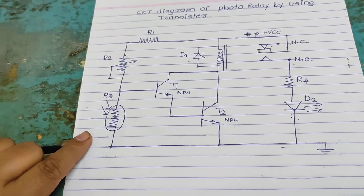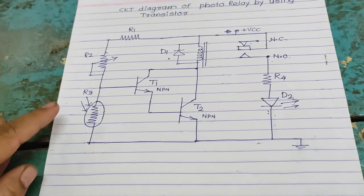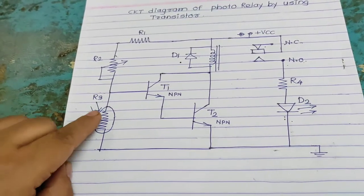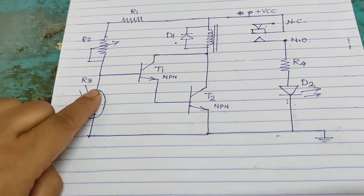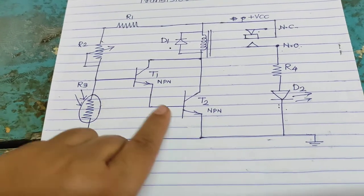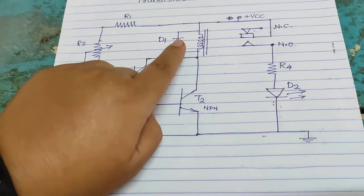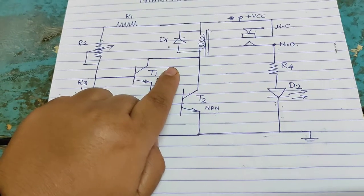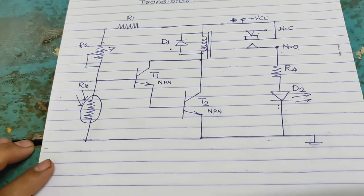Two conditions. Light incident on LDR. That time voltage across LDR is very low. That time T1 is off. T2 also off. The relay, no current through relay. Then relay is off and LED also off.